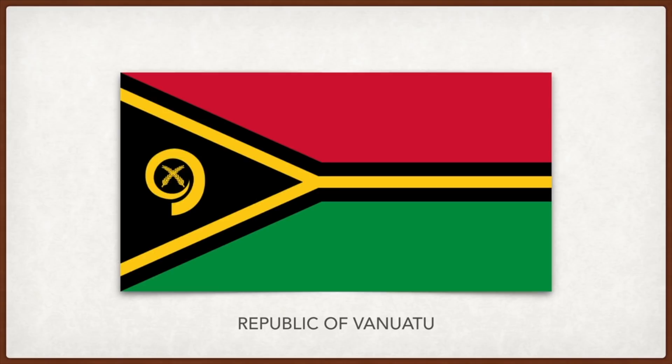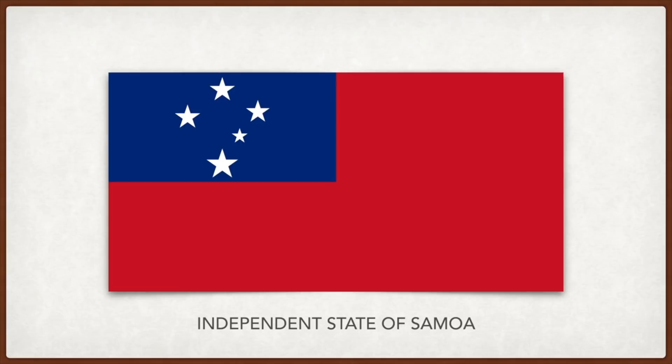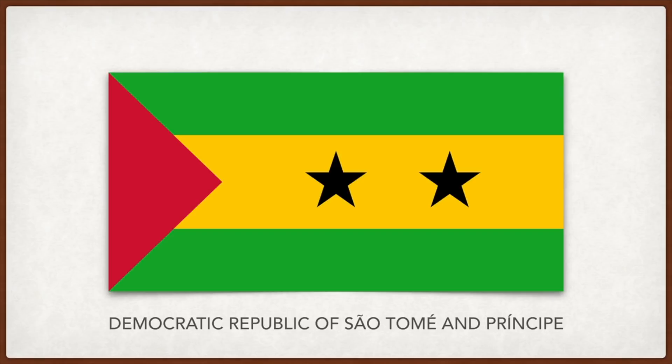Samoa: white stands for purity, blue for freedom, and red for courage; the Southern Cross in the blue canton is popular among Southern Hemisphere nations. São Tomé and Príncipe: the red triangle stands for equality and independence; the two black stars represent the people living on the two main islands; green is for the rich vegetation and yellow for the tropical sun.